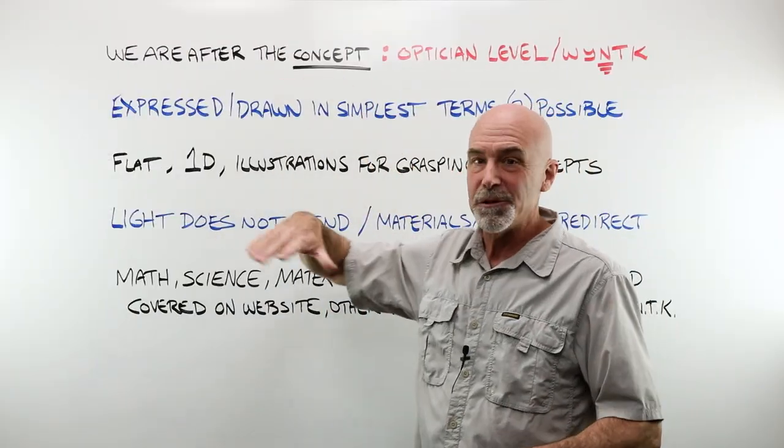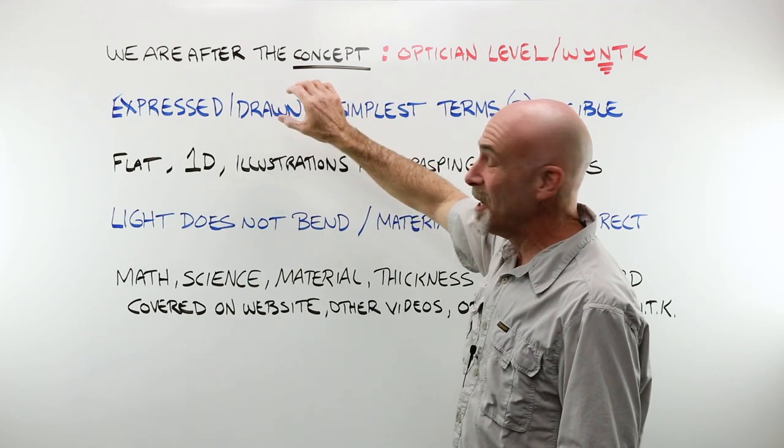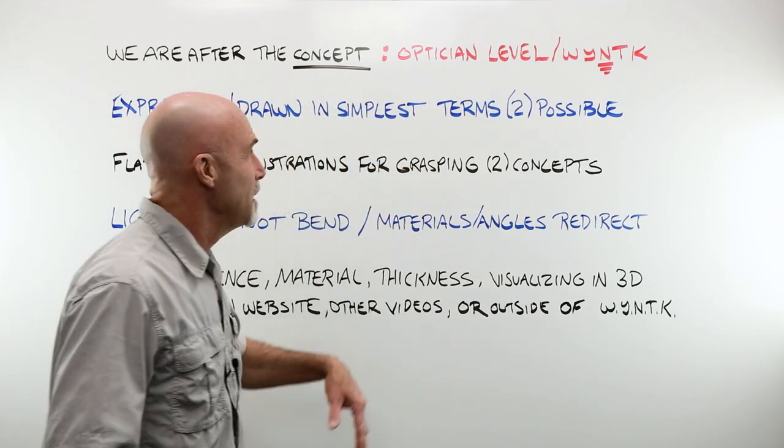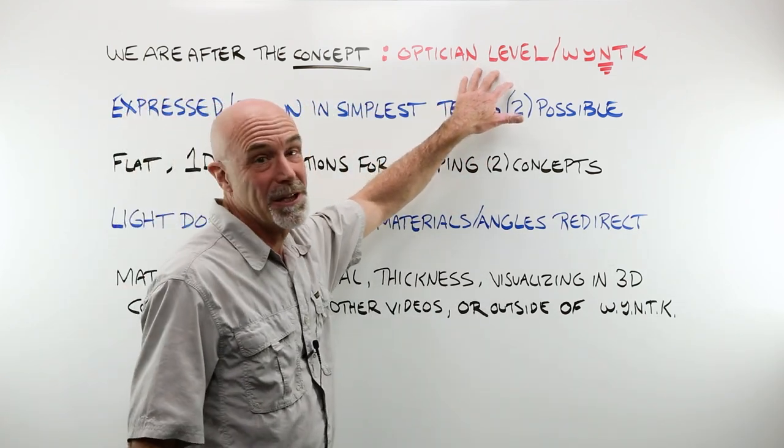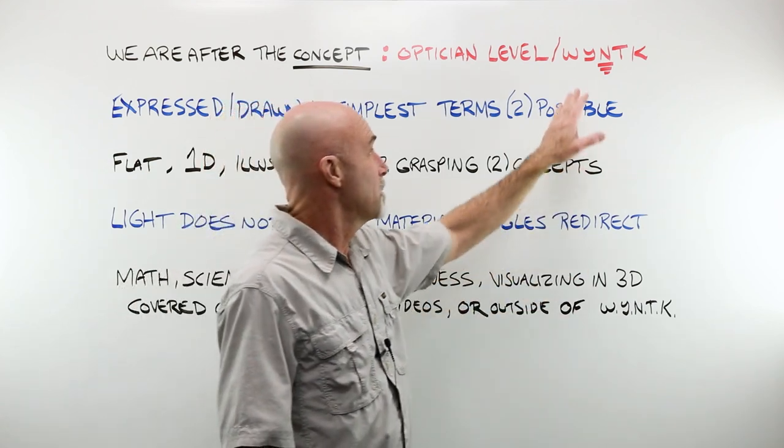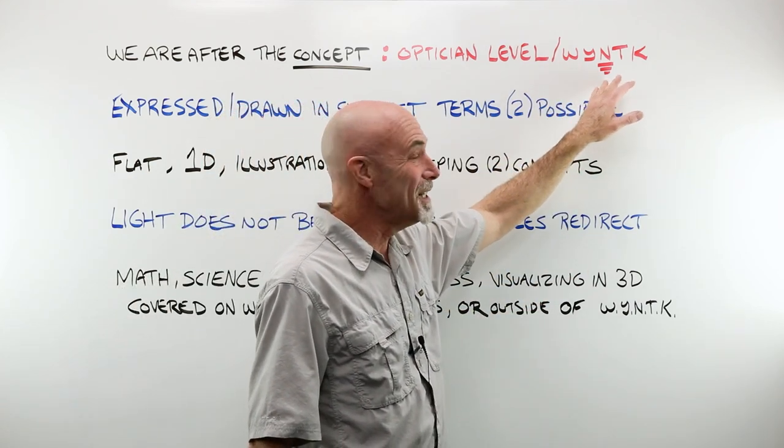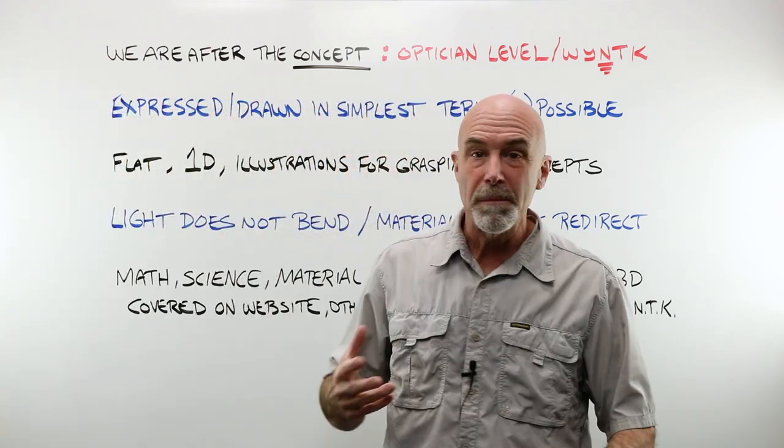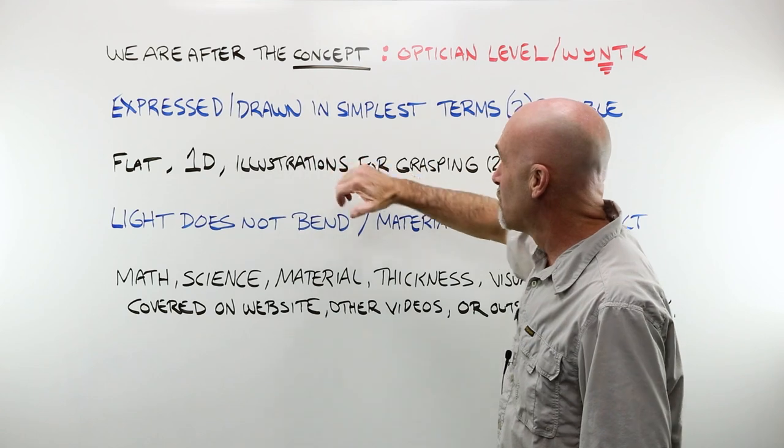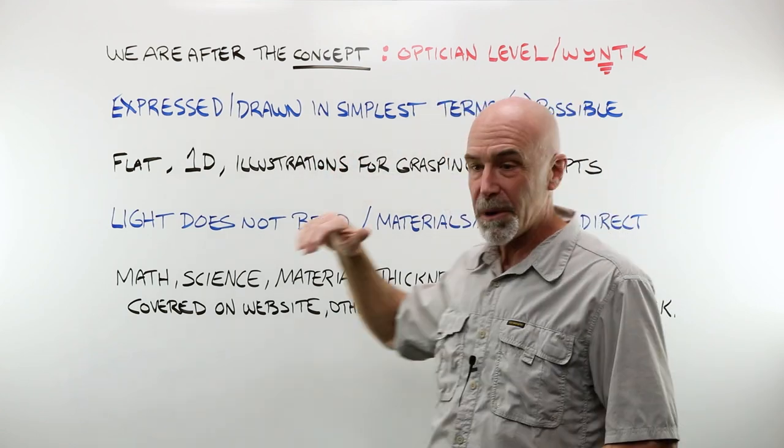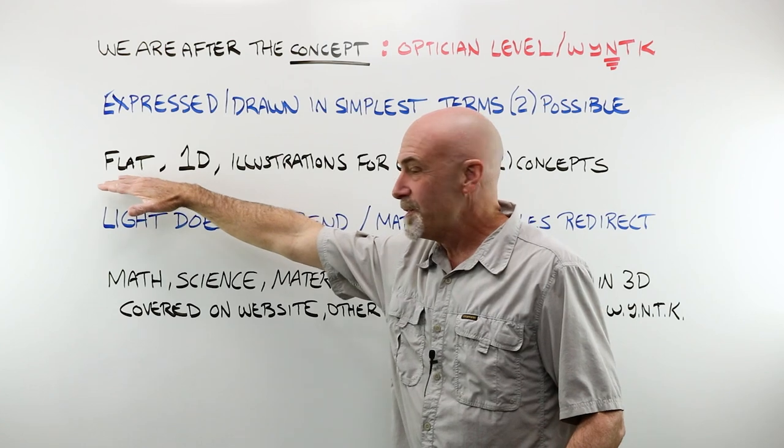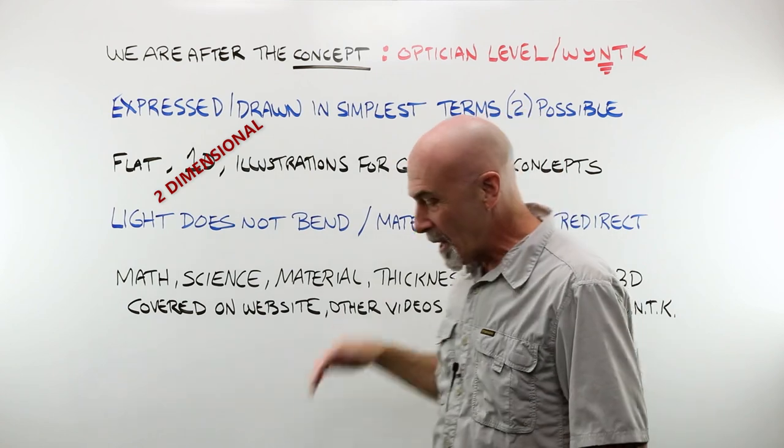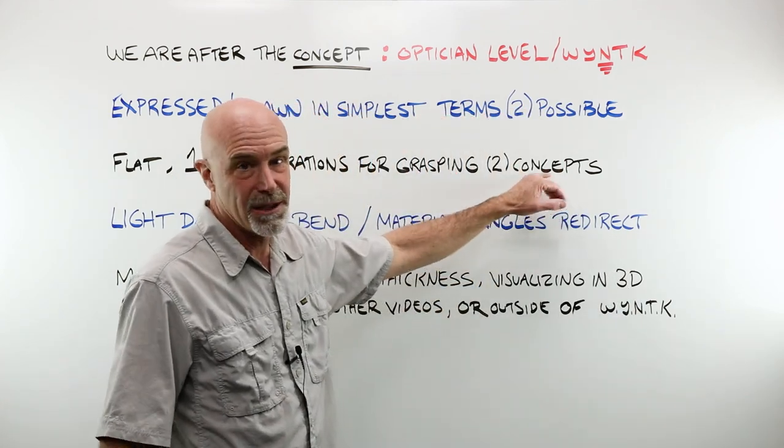What we are after with this piece today is a big picture concept. The concepts that you need to grasp at the optician level. We are talking about what you need to know. Everything that I am about to do, everything that I'm about to show you, is expressed and drawn and shown in the simplest terms possible. This is being shown in flat, one-dimensional illustrations for grasping two basic concepts.